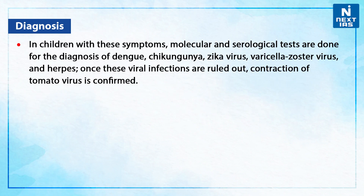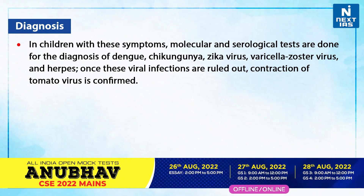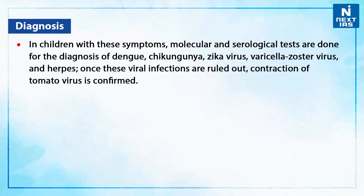Regarding the diagnosis of tomato flu, in children with these symptoms, molecular and serological tests are done. Serology tests are antibody tests to ascertain a previous viral infection and the body's immune response to it. They screen antibodies — proteins in the blood produced by the immune system to combat infections such as viruses. These tests are done for the diagnosis of dengue, chikungunya, Zika virus, varicella-zoster virus, and herpes. Once these viral infections are ruled out, the infection of tomato virus is confirmed.